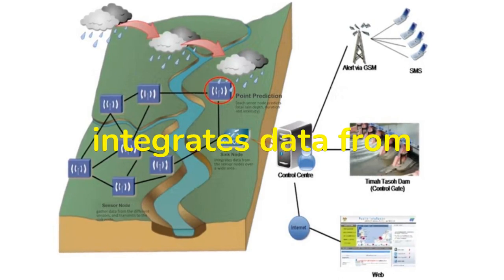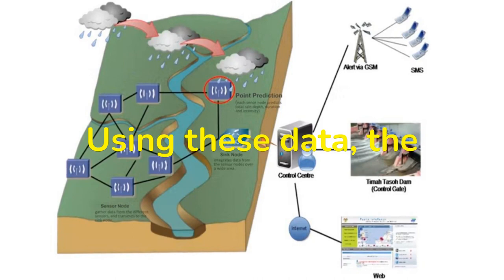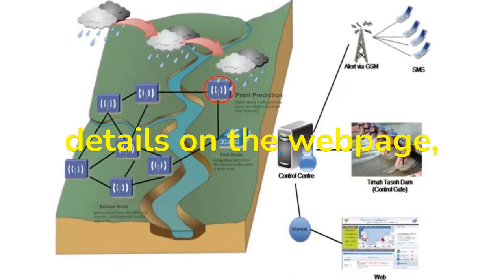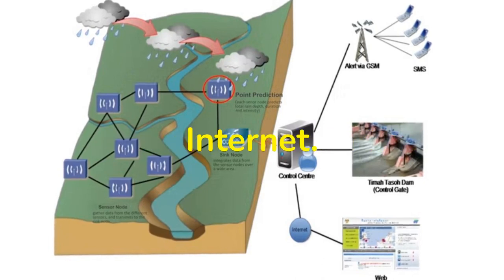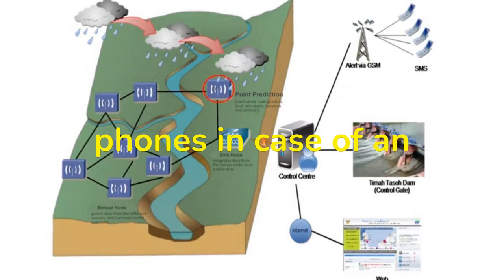Sync node integrates data from the sensor nodes over a wide area. Using these data, the control center processes and forecasts the weather details on the webpage, and we can observe them via the internet. Through GSM, an alert SMS is sent to mobile phones in case of an emergency.